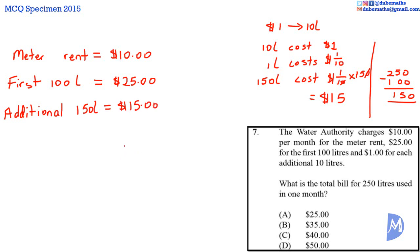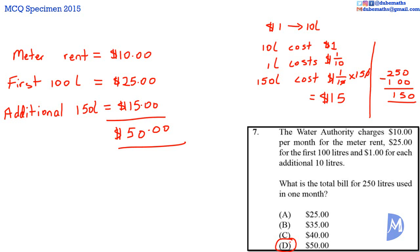The total bill is equal to $10 plus $25 plus $15, which equals $50. The answer is D. I am Mr. Dubé. Post a comment and let me know how you are managing. If you found this video useful, please like it. If you are new to this channel, please subscribe. Join me in the next video.